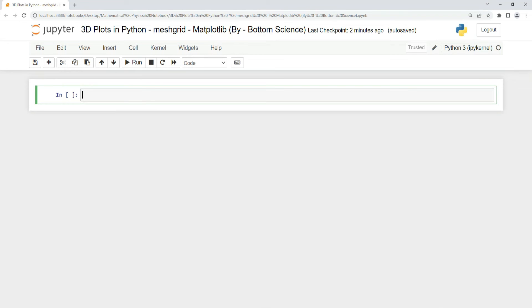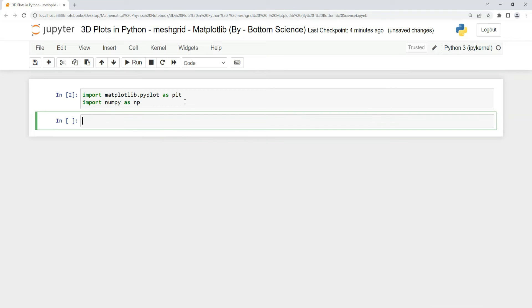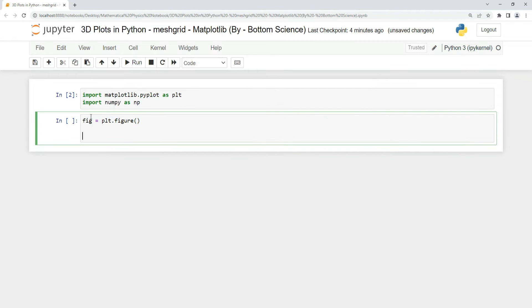Now we'll see how to use the meshgrid function and matplotlib library to plot our 3D elements. Let's start by importing the library. We create a figure using matplotlib and then add 3D projection to this figure using the ax variable.